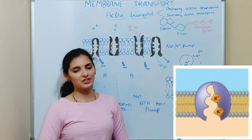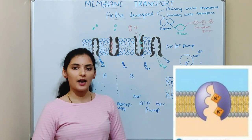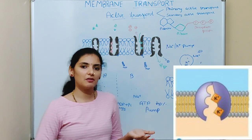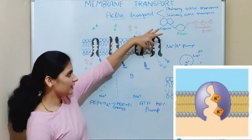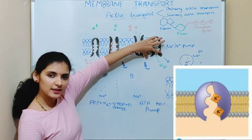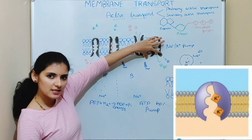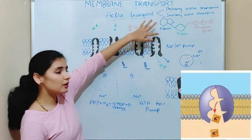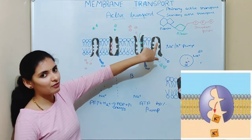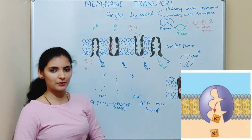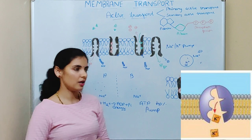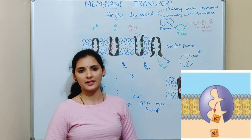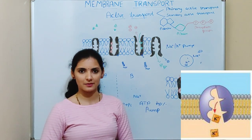Due to the release of the phosphate group, there is a change in the structure of the pump and it attains its original form — that is, it faces inward, or inside the cell. In this inward-facing form, it does not have affinity towards potassium ions, so the potassium ions are released into the cytoplasm.